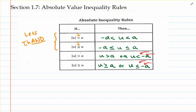The last two absolute value inequalities involve the greater than symbol. For that reason, I like to call these the 'greator' absolute value inequalities — and I'm going to go ahead and write that out, again with a typo: 'greator.'